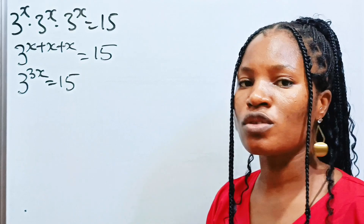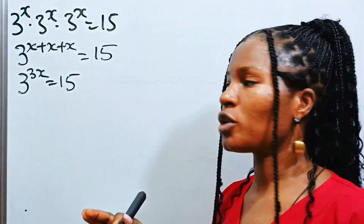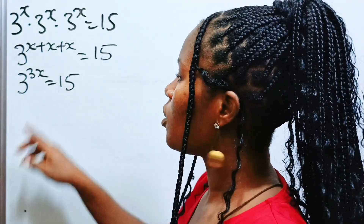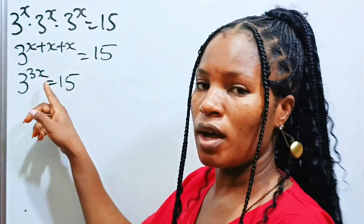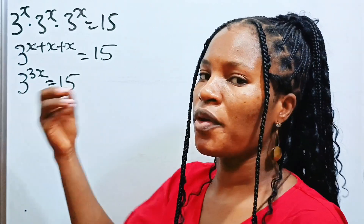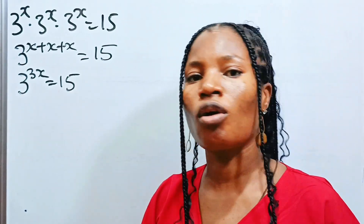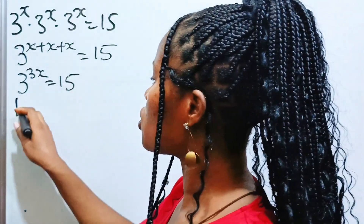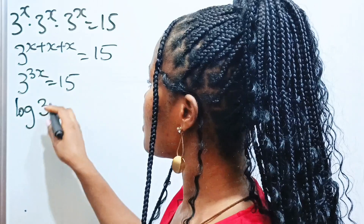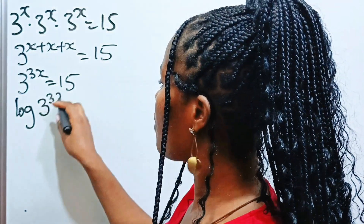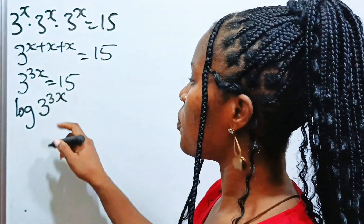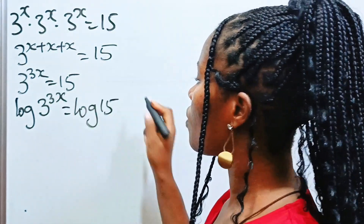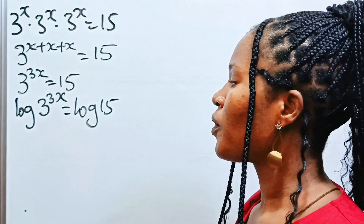Now we are going to introduce log to both sides of this equation, because the power is what we are looking for — that is the only thing that can bring it down. Log or ln. So let's introduce log to both sides: log of 3 to the power of 3x is equal to log 15.